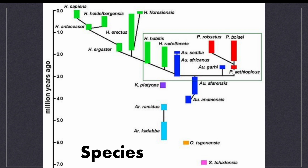The genus Australopithecus, who lived between 4.2 and 2 million years ago, has five known species: Australopithecus anamensis, Australopithecus afarensis, Australopithecus gadhi, Australopithecus africanus and Australopithecus sediba. There is another genus named Paranthropus who co-existed with Australopithecus between 2.5 and 1.5 million years ago, with three known species: Paranthropus aethiopicus, Paranthropus boisei and Paranthropus robustus.